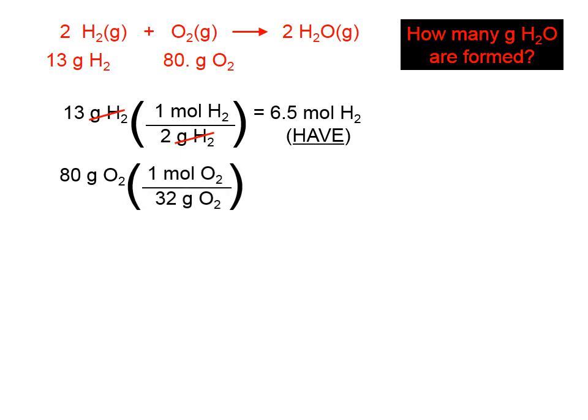We're going to do the same thing with oxygen. The molar mass of oxygen is twice 16, so that's 32. 80 divided by 32 is 2.5 moles of oxygen. And again, I write the word have, because that's how much we have. That's step one.